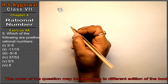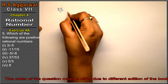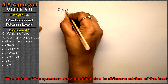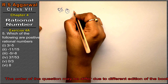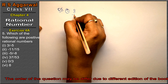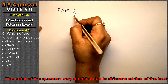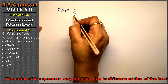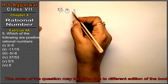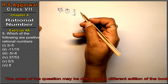Question number 5 is: write which of the following are the positive rational numbers. First part is 3 upon minus 5. Friends, when a negative value is on the bottom or on top, it is a negative rational number.